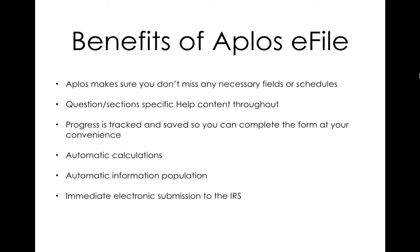Your progress is also tracked and saved so you can complete the form at your convenience. If you need to leave for a period of time to go get some information and come back, Aplos will track how far you have gotten in the form so you don't have to start all over again. We also do automatic calculations — so if you fill out a piece of the form that needs to subtract from another piece and then tie into a later piece, all of those calculations are done for you. That ties into automatic information population: if we ask for a piece of information that needs to appear in multiple places throughout the form, we will just put it there for you.